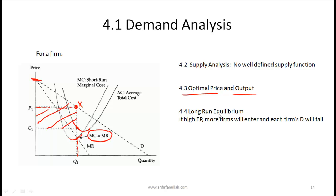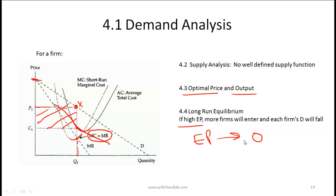In the long run, high economic profit encourages more firms to enter, and each firm's demand curve will fall. If the toothpaste business is very profitable, other firms come in more easily. As more firms enter, the demand curve faced by each individual firm comes down until the price charged equals the cost, and eventually economic profits come down to zero.